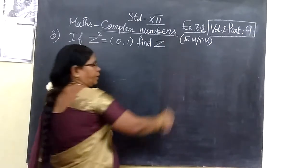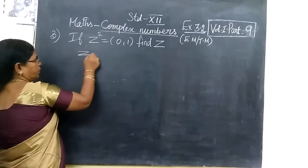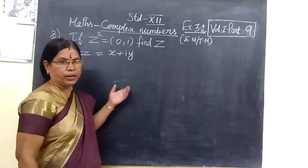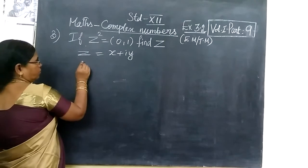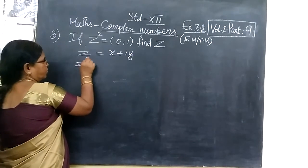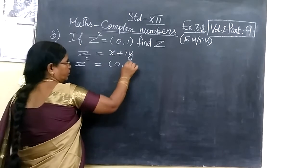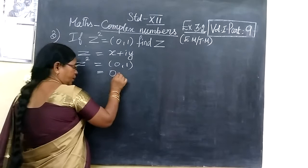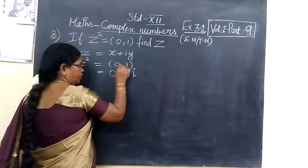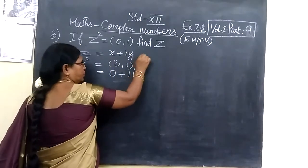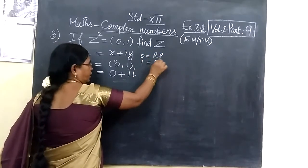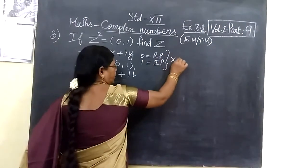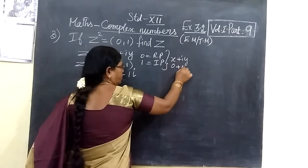Here, the standard form of z is equal to x plus iy. This we know. x is the real part and y is the imaginary part. The question given is z² = 0+1i. The 0,1 is written in standard form — real part plus imaginary part. 0 is the real part and 1 is the imaginary part. So we write x plus iy equal to 0 plus 1i.